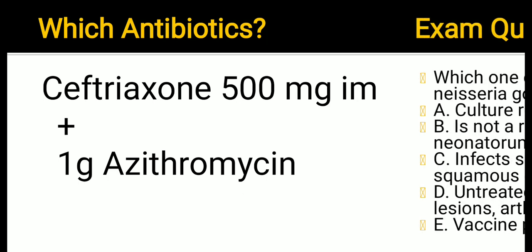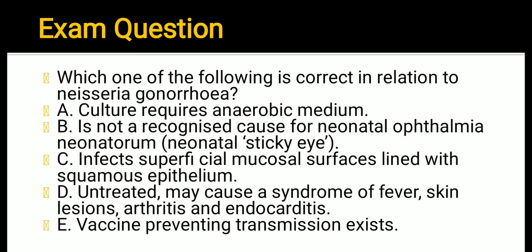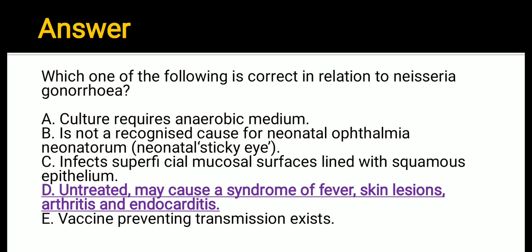Different exam questions come related to gonorrhea. Here is one example: Which of the following is correct in relation to gonorrhea? A: Culture requires anaerobic medium. B: It is not a recognized cause of neonatal ophthalmia neonatorum. C: It infects superficial mucosal surfaces lined with squamous epithelium. D: Untreated, it may cause a syndrome of fever, skin disease, arthritis, and endocarditis. E: A vaccine preventing transmission exists. The correct answer is D — untreated gonorrhea may cause a syndrome of fever, skin lesion, arthritis, and endocarditis.